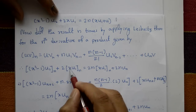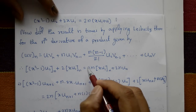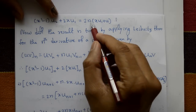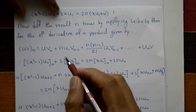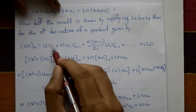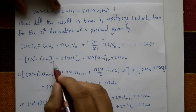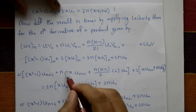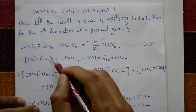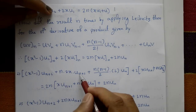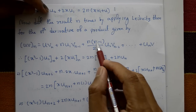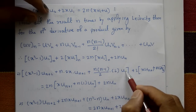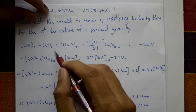Applying Leibniz's theorem to (x² - 1)·u₂: we get (x² - 1)·u_{n+2} + n·2x·u_{n+1} + n(n-1)/2! · 2·u_n. Then for the right-hand side 2n·x·u_{n+1}, the x term contributes u_{n+1} plus n·1·u_n. Collecting terms step by step.